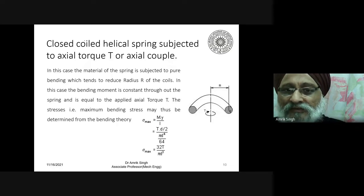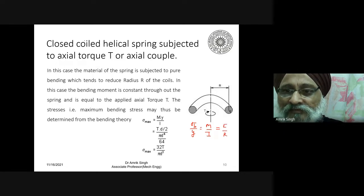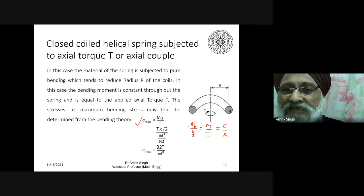From the bending formula: sigma_B / Y = M / I = E / R. Using this formula, you can find the maximum bending stress. So sigma_B is equal to M times Y upon I.